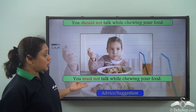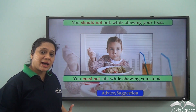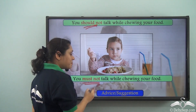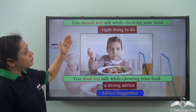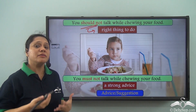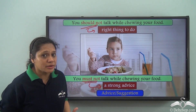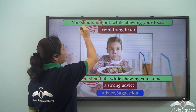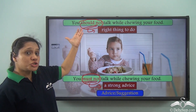We can also say, 'You must not talk while chewing your food.' 'Must not' is also giving us an advice or a suggestion. The difference is that 'should not' refers to something that is the right thing to do, whereas 'must not' gives a strong advice. The use of 'must not' is stronger than 'should not' when both are giving advice.